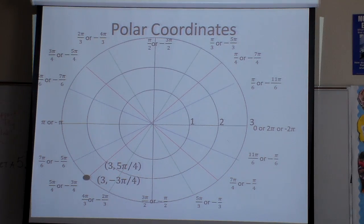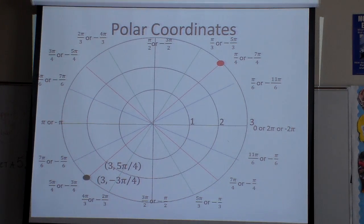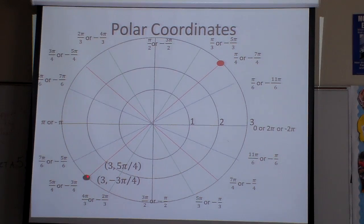Another way I could write that very same point — look, if I took the line and went straight across, notice this one's in red. I would be right there. What is that angle right there? It's pi over 4, or negative 7 pi over 4. Pi over 4 would go this way, negative 7 pi over 4 would go there. However, look what's different now — I want to get that back over to here. I want to move it over there.